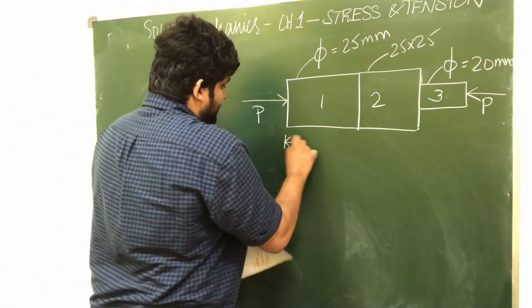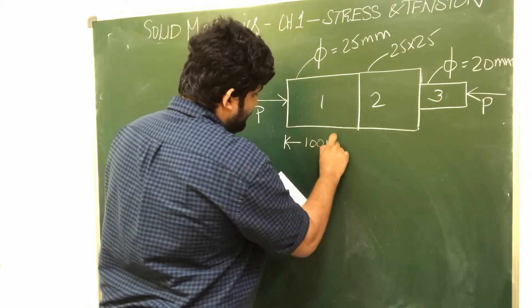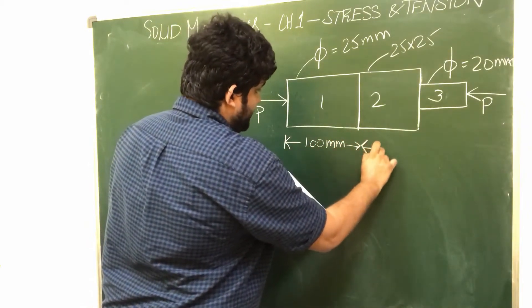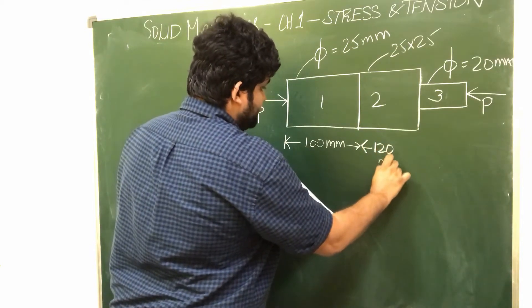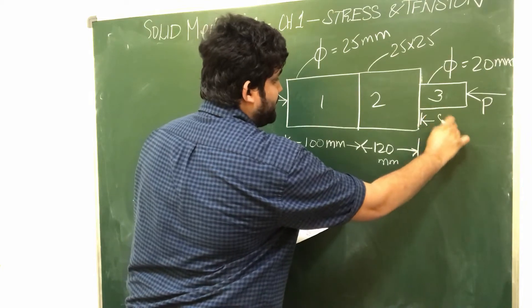Length of first bar is 100 mm, second bar is 120 mm, third bar is 80 mm.